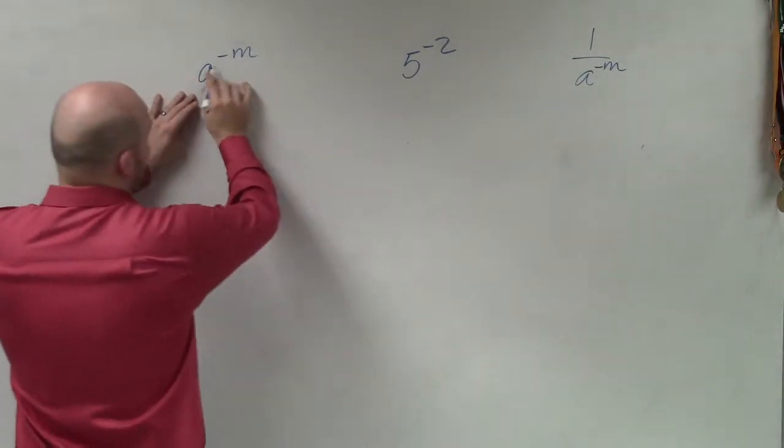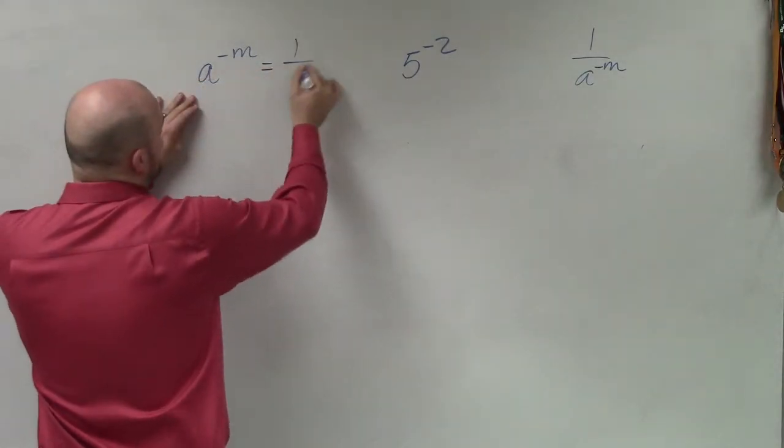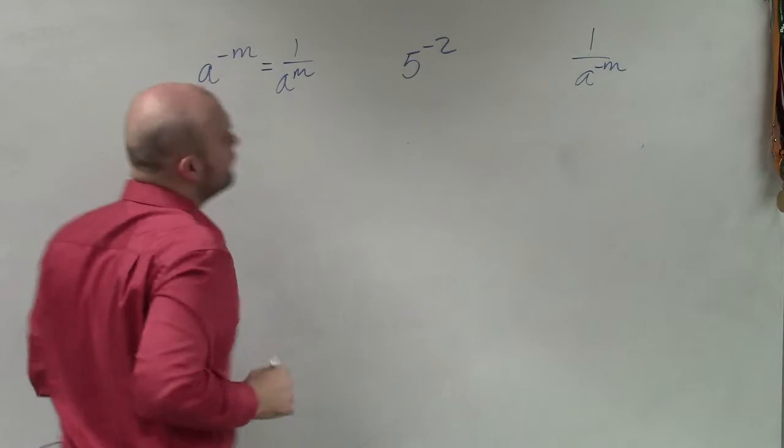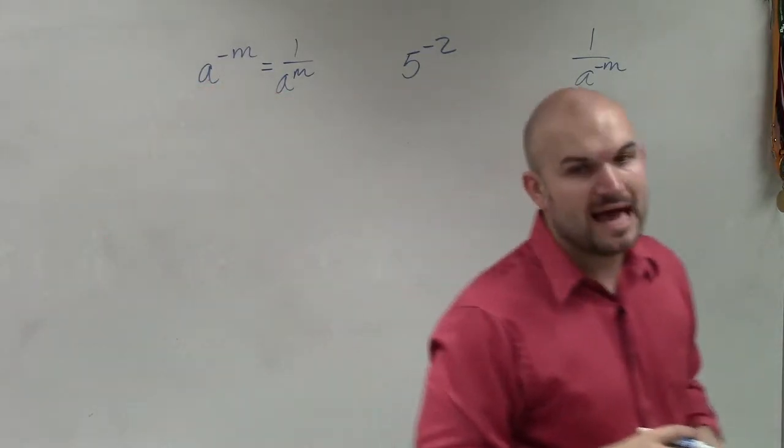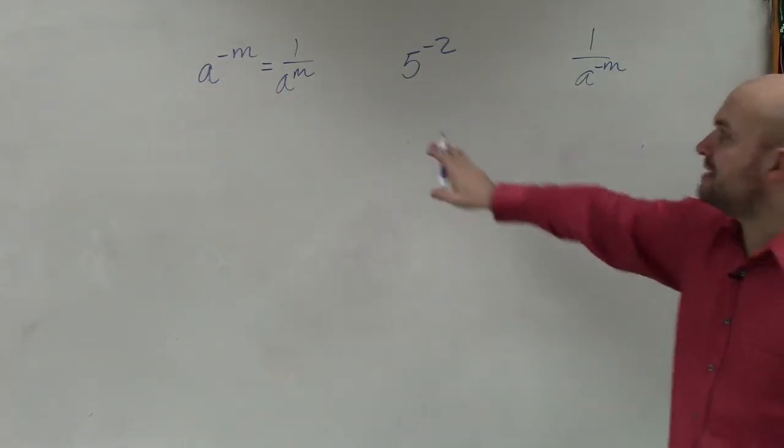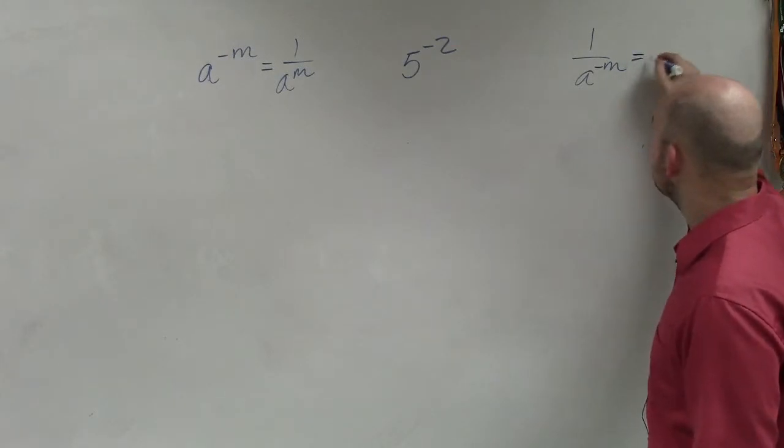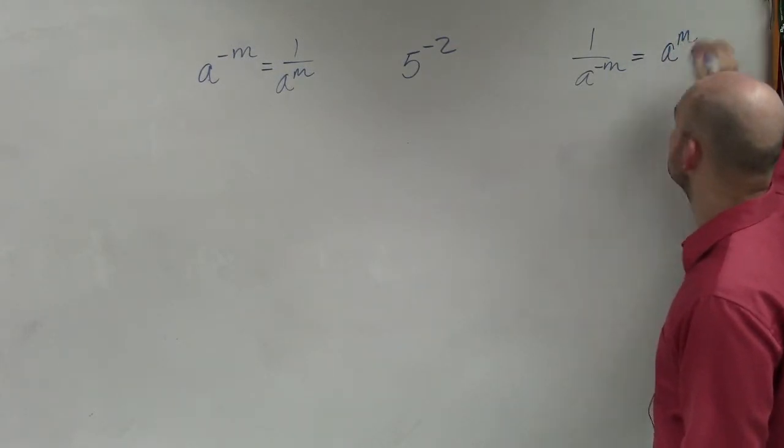So for instance, if I have a to the negative m, if I write that as its reciprocal of 1 over a to the m, then I can rewrite it as a positive exponent. And in this case, I can write this as a to the positive m.